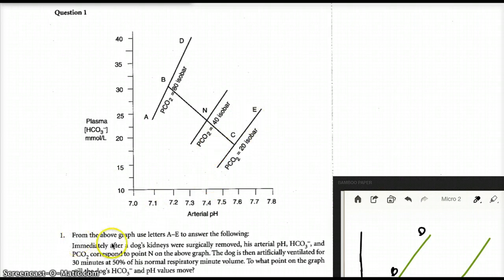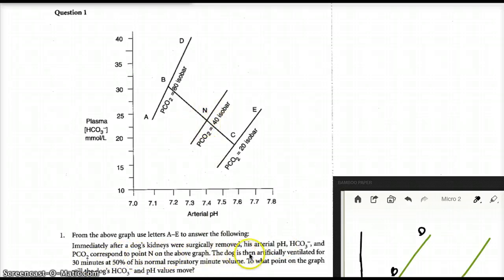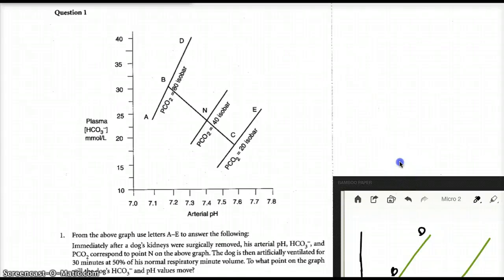The question says: from the above graph, use letters A to E to answer the following. Immediately after a dog's kidneys were surgically removed, his arterial pH, bicarb, and PCO2 correspond to point N on the graph — so it was normal. The dog is then artificially ventilated for 30 minutes at 50% of his normal respiratory minute volume. To what point on the graph will the dog's bicarb and pH values move? After we remove the dog's kidneys, we ventilate at 50% of the normal respiratory minute volume.